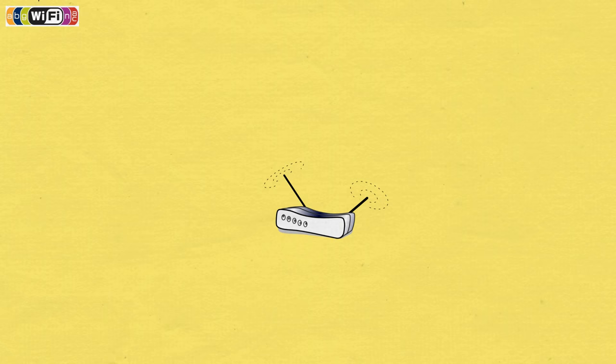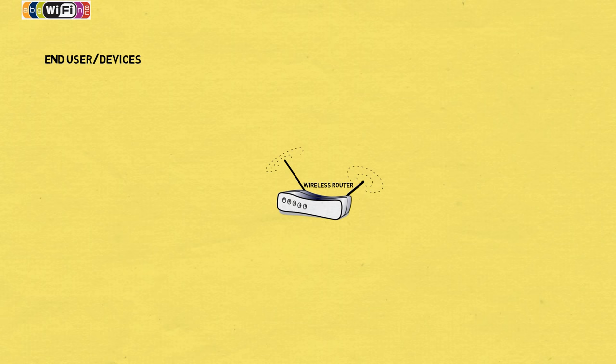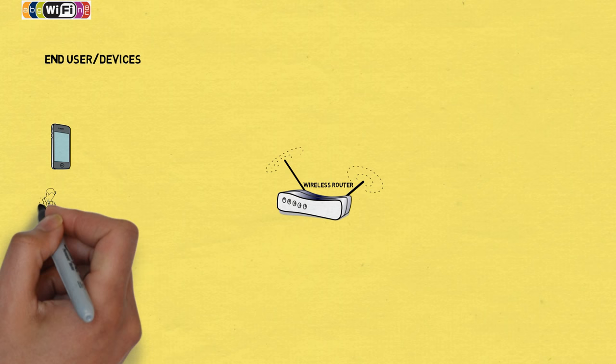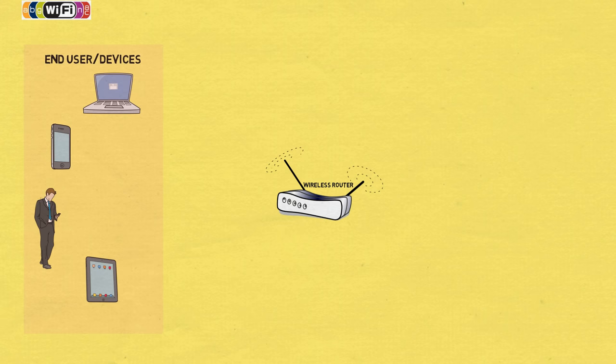Wi-Fi networks are built with several hardware components like wireless access points or routers, and end-user devices like mobile phones, tablets, laptops, etc., which are equipped with Wi-Fi adapters.